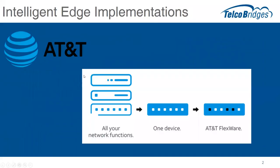A few things are starting to happen in our industry that are very interesting — some that will fundamentally change how communications applications will be delivered to users. One of them is the offer from AT&T that they launched combining multiple network functions into a single device, creating an offer they call AT&T FlexWare.